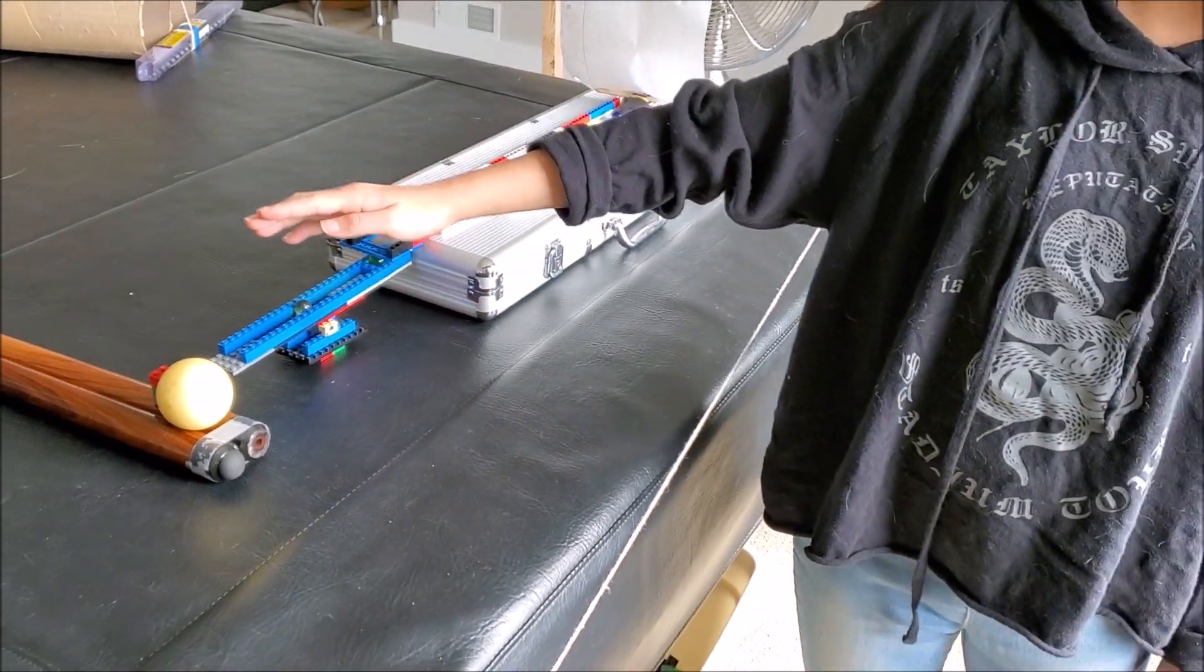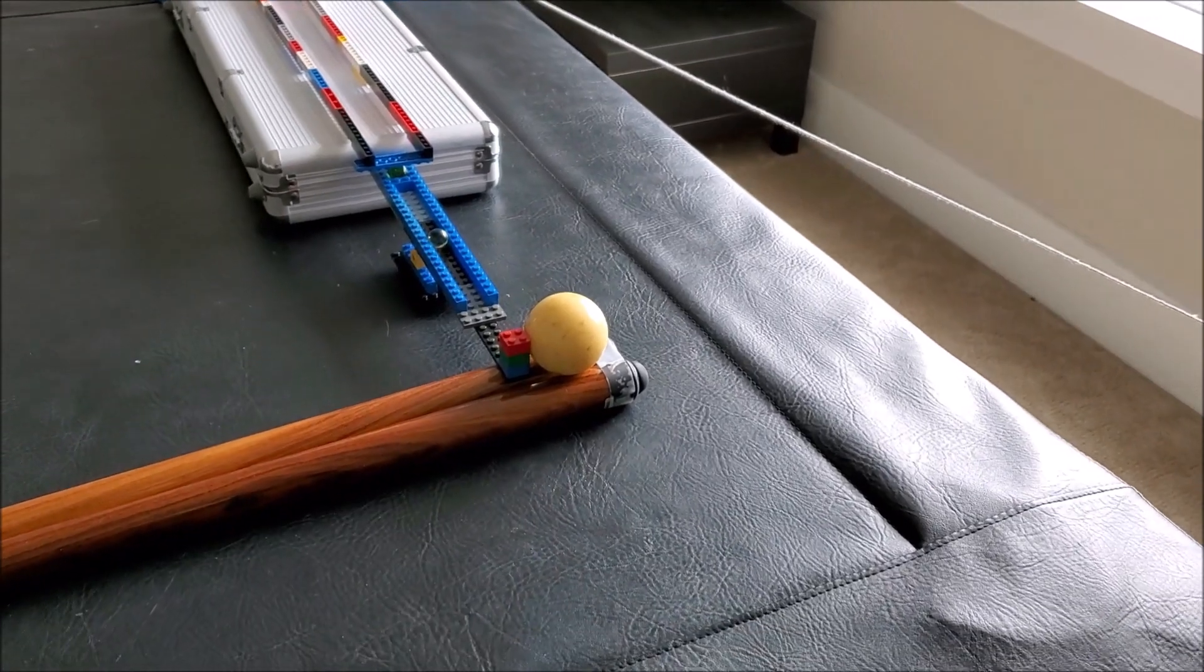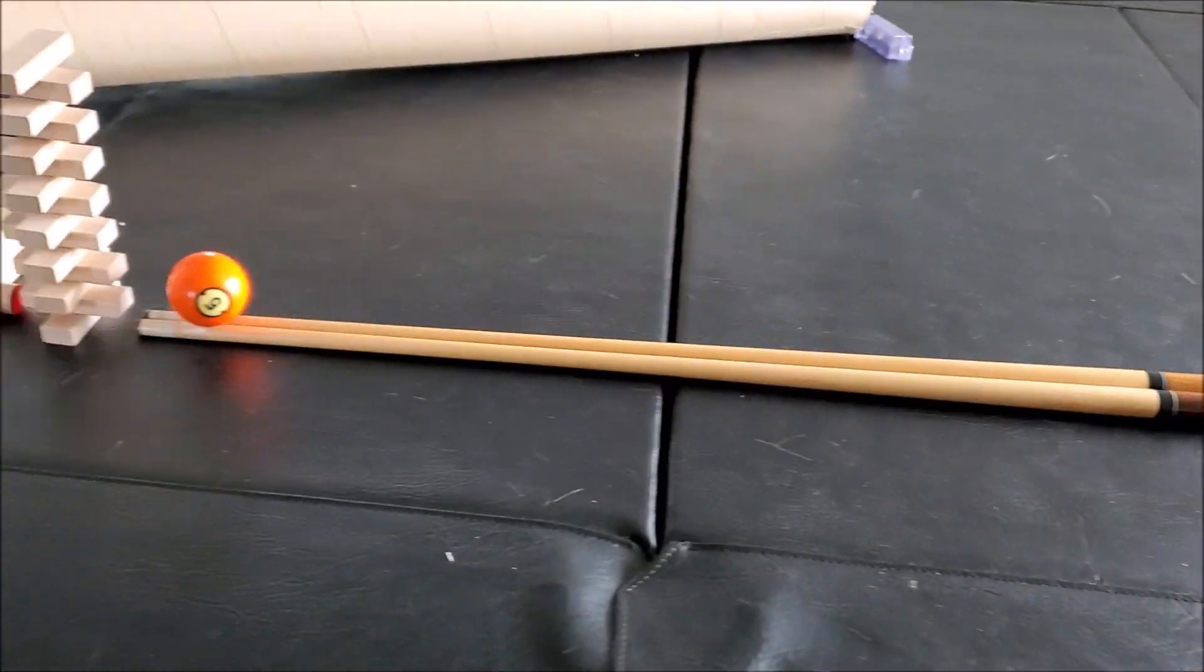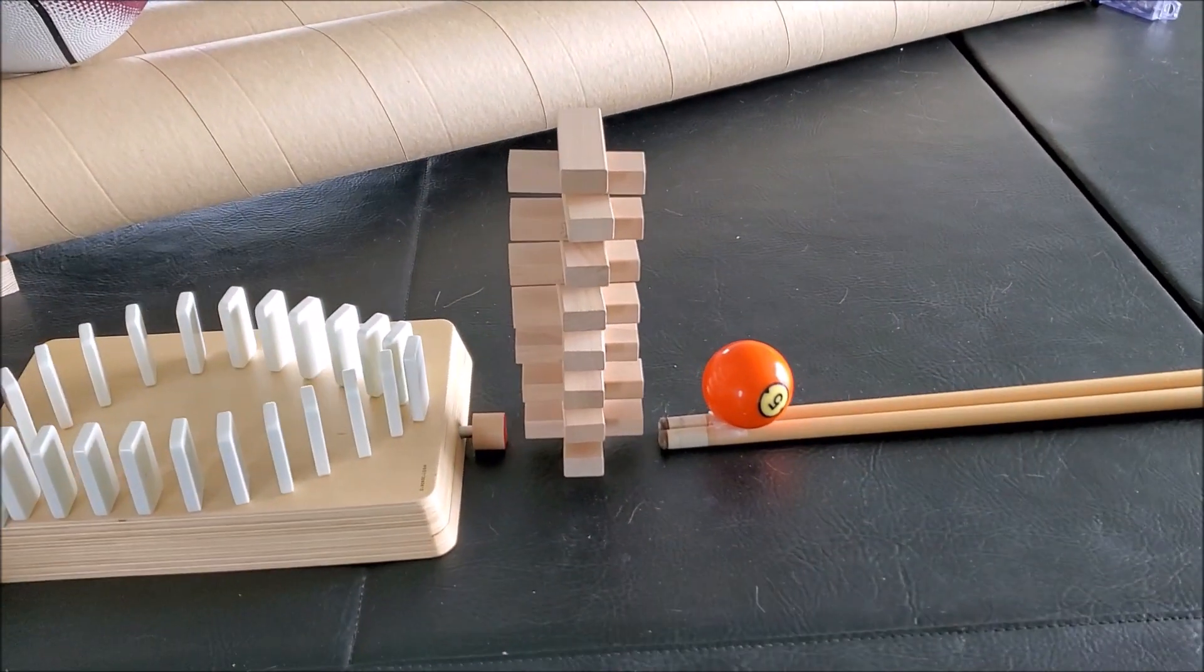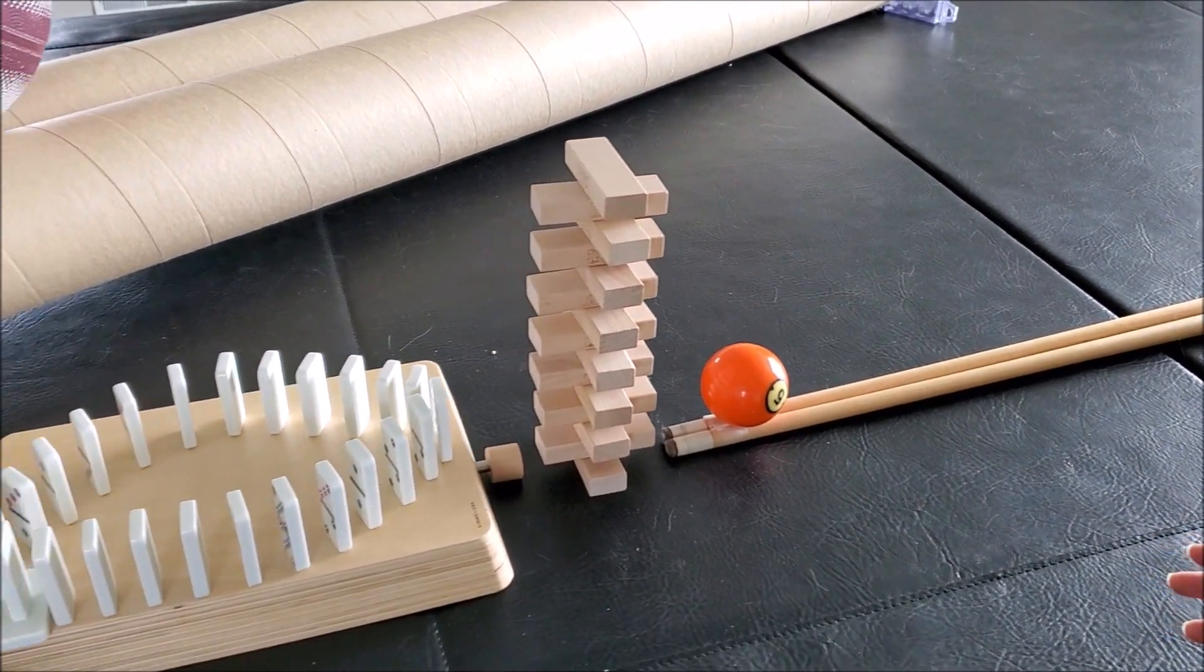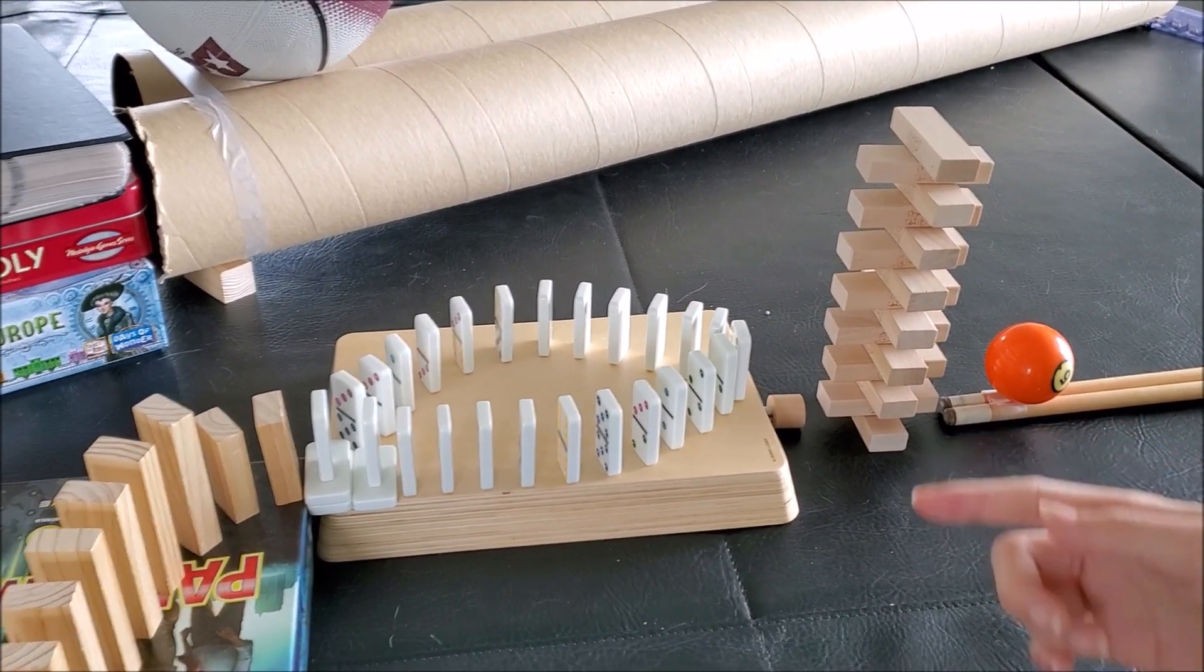The barrier on the cue ball will lift up, and the cue ball will roll down the two cues. The energy will transfer to the orange ball and knock down this Jenga tower. That will in turn knock down the dominoes and the blocks.